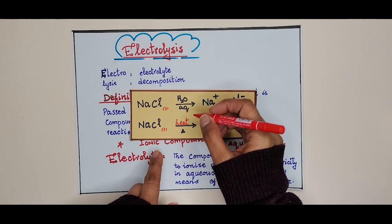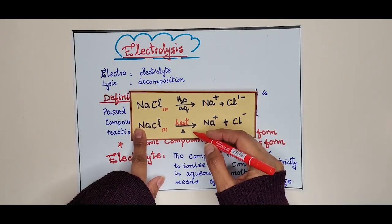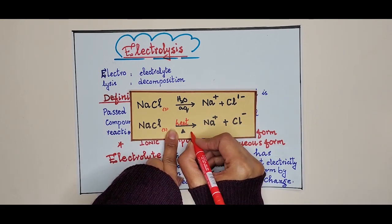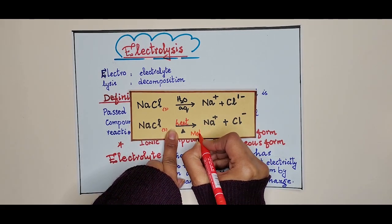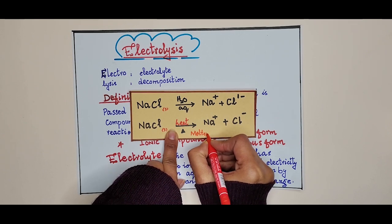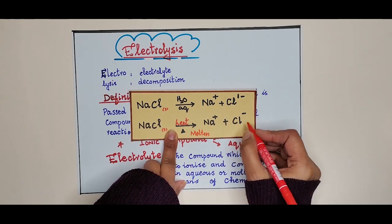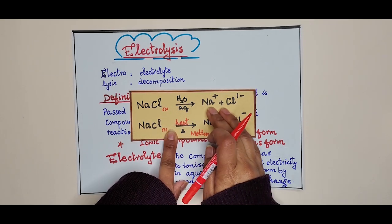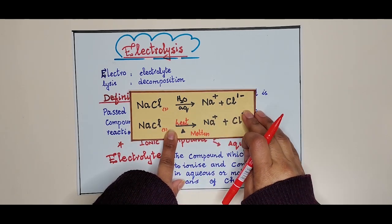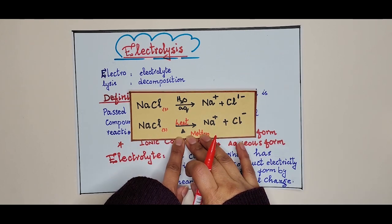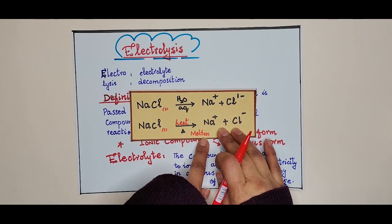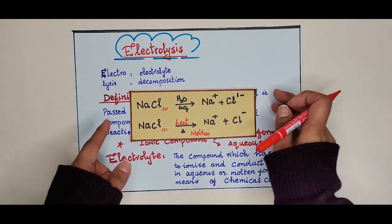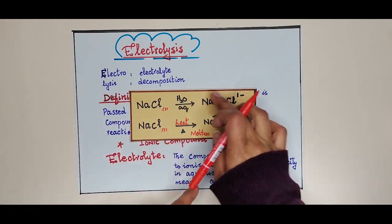In molten state, the sodium and chloride ions are present and free to move. Sodium chloride ionizes in aqueous form to give sodium and chloride ions, and sodium and chloride ions are also formed in molten form. These ions are then responsible for conducting electricity. This solution in water or in molten form is called an electrolyte.